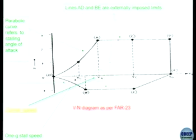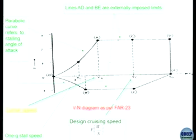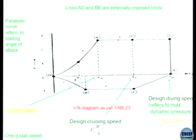Lines AD and BE are the two horizontal lines — externally imposed limits or cuts. The pilot can technically take the aircraft beyond A, but we impose a limit because Nz max should not be exceeded. There is one speed Vc, the cruise speed, which is a function of wing loading. Then there is Vd, the design diving speed — the speed at which the dynamic pressure acting on the aircraft is maximum, beyond which the aircraft cannot sustain load because it will structurally rupture.